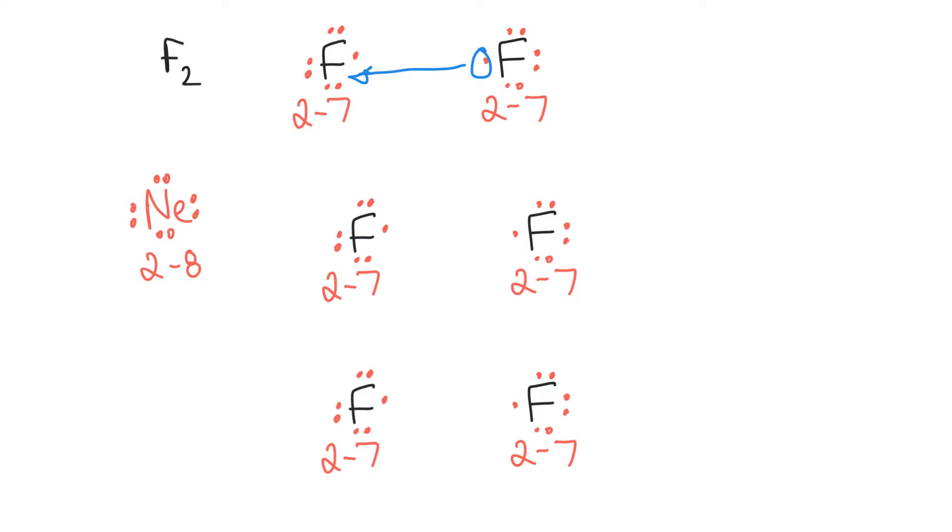What does that give us? That gives us this fluorine on the left which has eight electrons around it. That is a very good thing. So now it is isoelectronic with neon. Isoelectronic means the same electron configuration. Whenever you've got things that are isoelectronic with noble gases, that's a very good sign that they are stable.